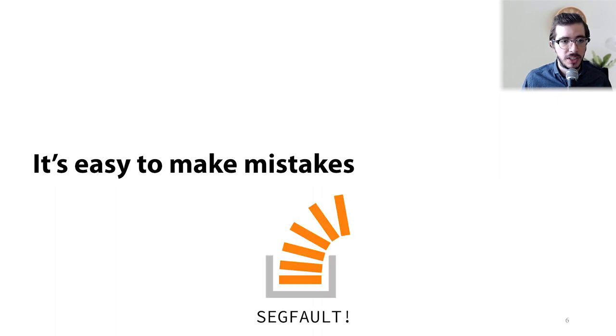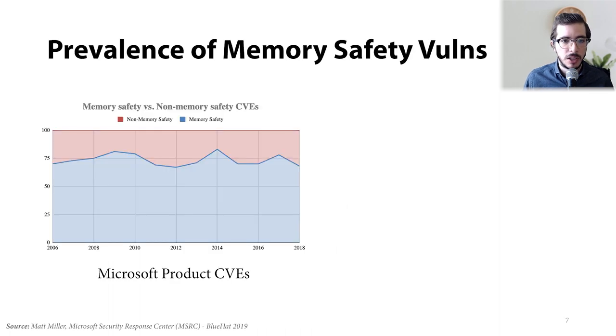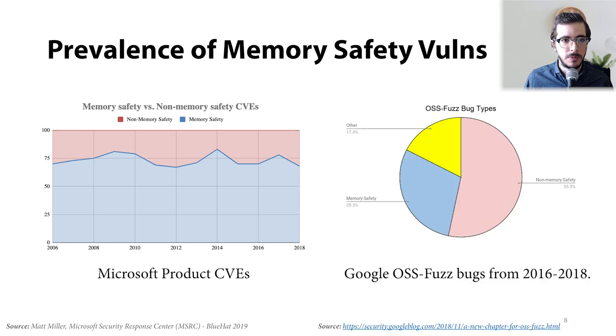Now, just what is memory safety? Put simply, it's when you access memory in an unintended way. Think back to any time you've mistakenly overflowed a buffer or forgot to free memory. To put into context just how common these vulnerabilities are, consider that 70% of all CVEs in Microsoft products each year are memory safety related. And not to pick on Microsoft, but open source software doesn't fare any better, with over 29% of bugs found in Google's OSS fuzz being memory safety related.